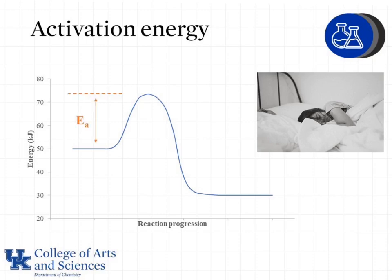The activation energy is the height of that hump, so someone who is a morning person would have a very small activation energy and someone who is not a morning person would have a very large activation energy. The activation energy always starts from the reactants to the top of the peak in the middle, where we have the activated complex or the transition species.